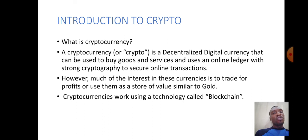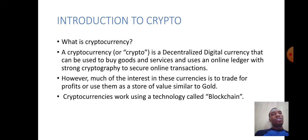What is cryptocurrency? A cryptocurrency, or crypto, is a decentralized digital currency that can be used to buy goods and services. It uses an online ledger with strong cryptography to secure online transactions. However, much of the interest in these currencies is to trade for profit or use them as a store of value, similar to gold. Cryptocurrency works using a technology called blockchain.